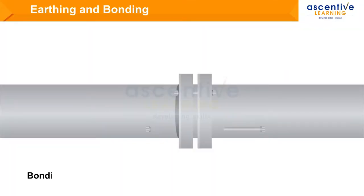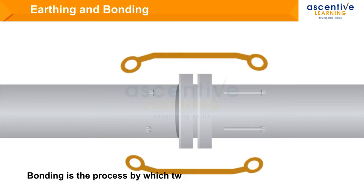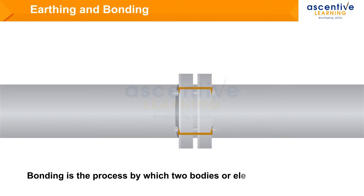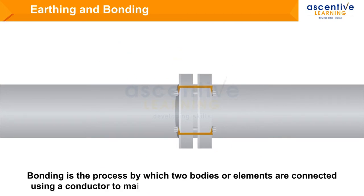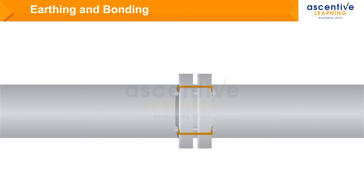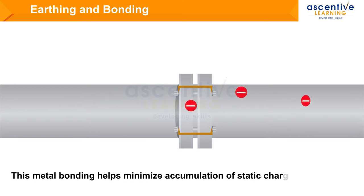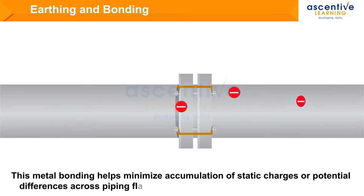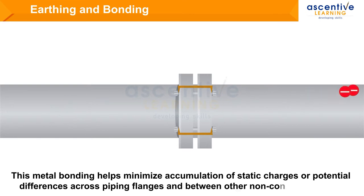Bonding is the process by which two bodies or elements are connected using a conductor to maintain electrical continuity and prevent sparking. This metal bonding helps minimize accumulation of static charges or potential differences across piping flanges and between other non-conducting joints.